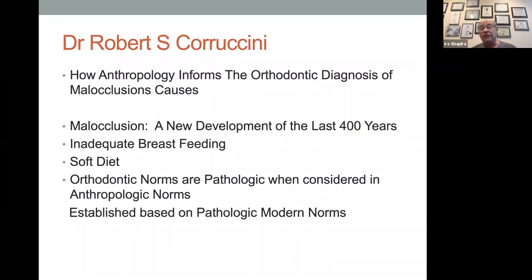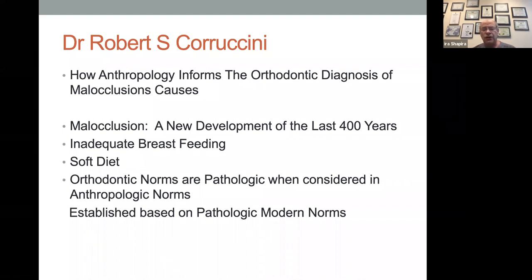Dr. Coricini is a game changer for us. He's an anthropologist and an orthodontist, and he went back 400 years and said that 400 years ago almost everybody had big wide broad palates. This malocclusion we're seeing now is new — it hasn't always been around. He put the causes as inadequate breastfeeding, soft diet — babies weren't meant to eat mush — and orthodontic norms established in the last 100 to 120 years. So the norms are based on pathological numbers because the pathology occurred 300 years before.